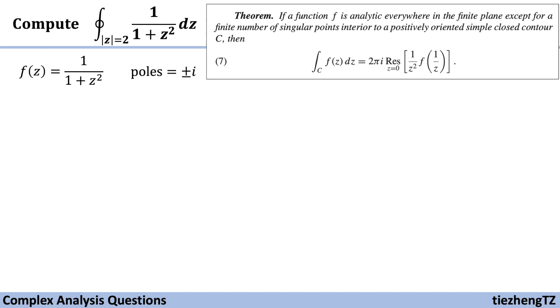These two points are within the given domain |z|=2, which is a simple closed contour—actually a circle with radius 2—and we can say it is positively oriented. So we can use the theorem to calculate this question.